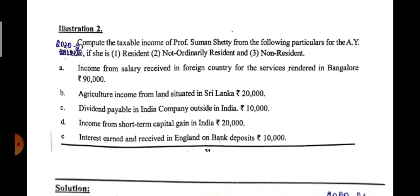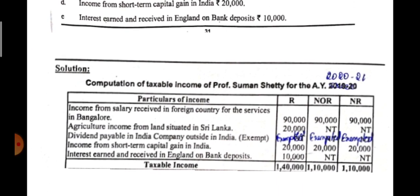Point E: interest earned and received in England on a bank deposit. It is clearly stated that the interest is earned and received in England — that means it is located outside India, earned outside India, and received outside India. Therefore, it is taxable only in the case of a resident. In the case of not ordinary resident and non-resident, it is not taxable.